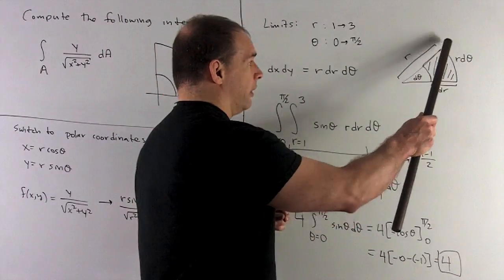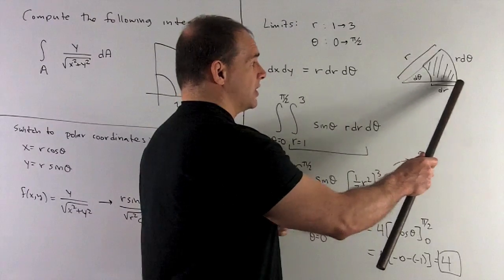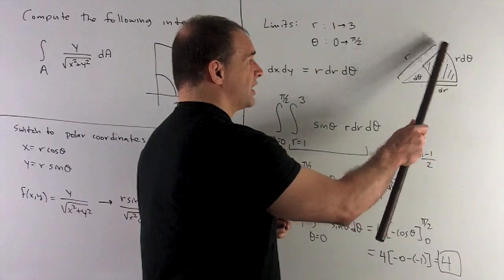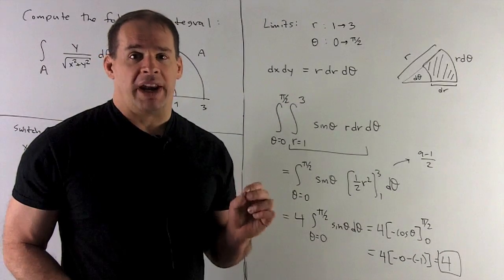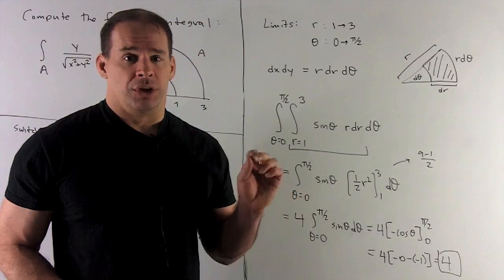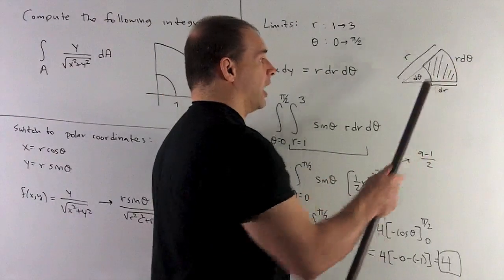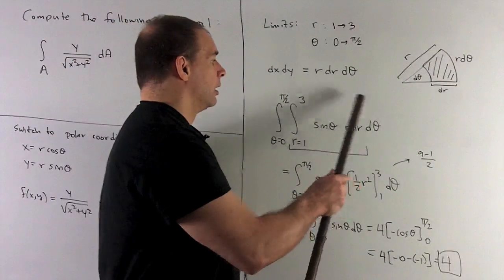I'll call the length of the side of the wedge r. This side is going to be dr, this side here, that's an arc along a circle, so that length is just going to be the radius times the angle, so that's r d theta. You note, take base times height, we get r dr d theta.